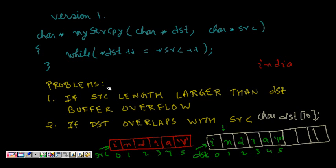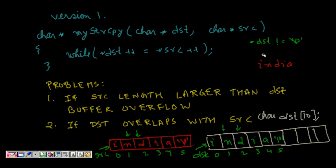Similarly, source is incremented and we go to the next position. Now *dst = *src copies 'N' from source to destination. The pointers are incremented again — dst moves to index 2 and src moves to index 2. Every time, there is also an implicit check: *dst is not equal to '\0'. Finally, when \0 is assigned, it is copied first and then the while condition becomes false, so it exits the loop. This works correctly in the normal case.